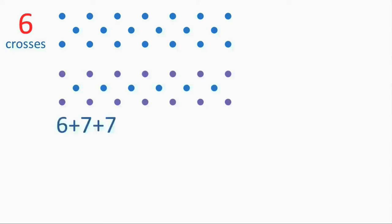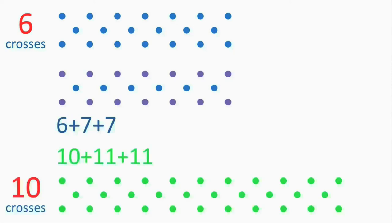In the same way, for a row of ten crosses, we get this. Again, the lengths of the rows depend on the number of crosses in the chain. And we can show this by rewriting our expressions like this and this.